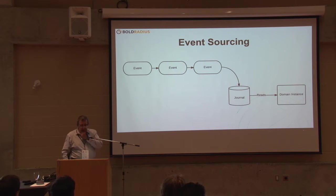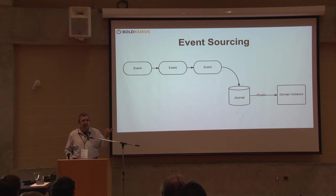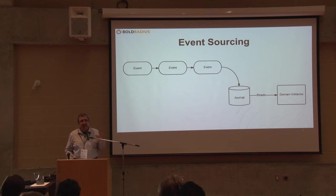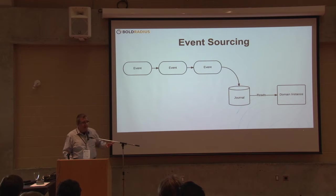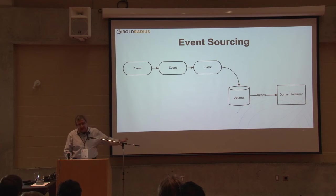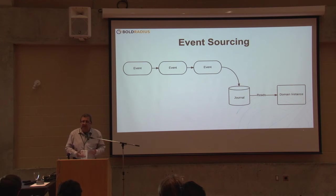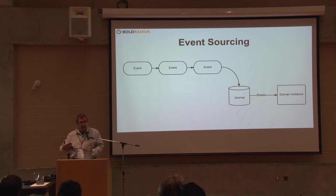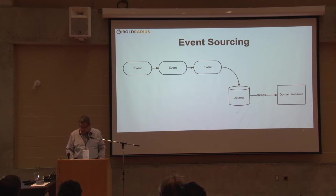Event sourcing is producing state — some current amount, some current object state — from a series of events. Events are differentiated from commands: both are messages, but an event happened in the past. There's no such thing as rejecting an event — it's already done. A command is a request to do something in the future and might result in an event. We have these series of events stored in what we call a journal. We read that journal in order to produce a domain instance — say our bank balance, or in this case, the current state of an auction.